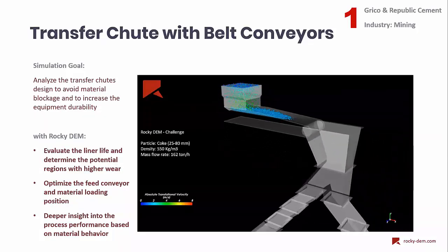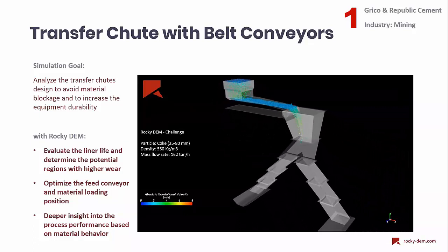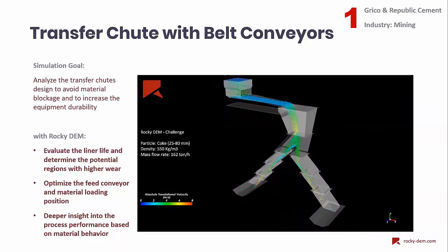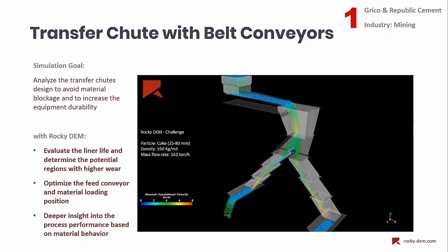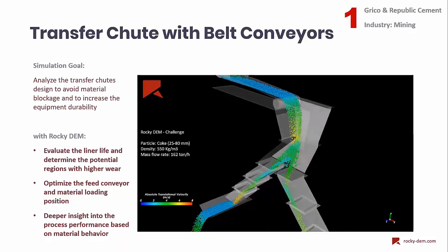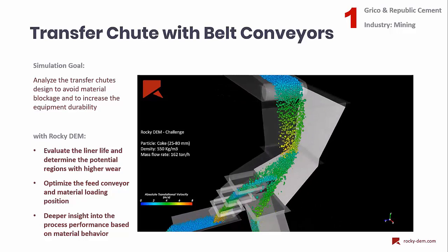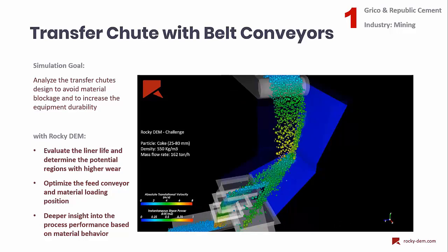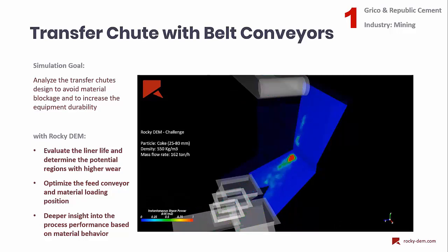Here we have the transfer chute as the first case. The transfer chute is widely used in mining industries and here the goal is to analyze the process design to avoid material blockage and to increase the equipment durability. Cook materials are simulated as spherical particles.